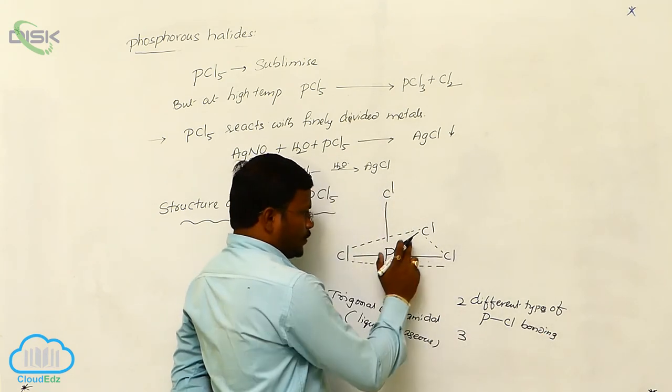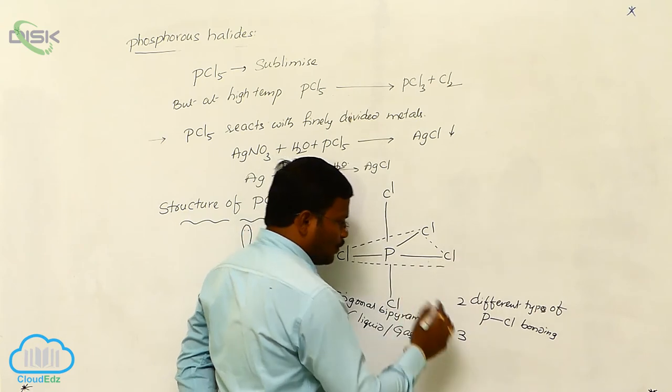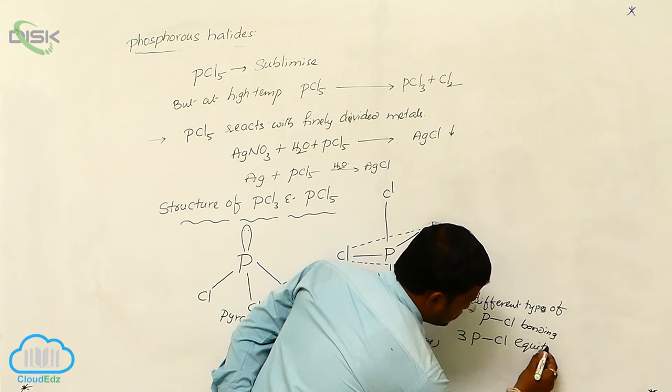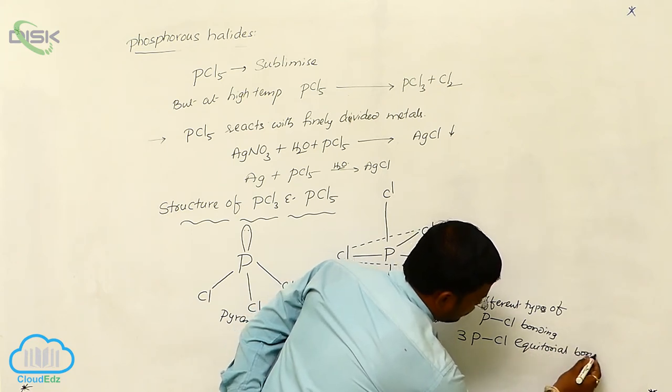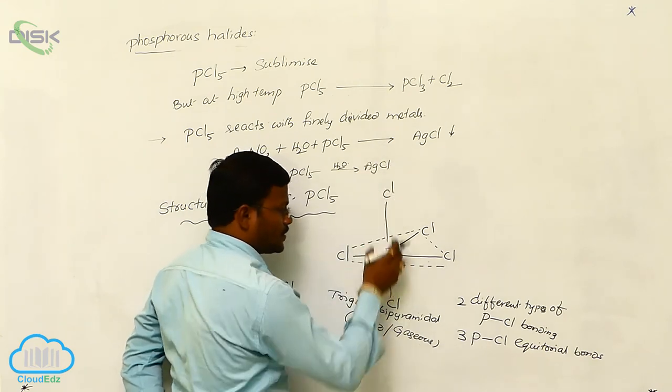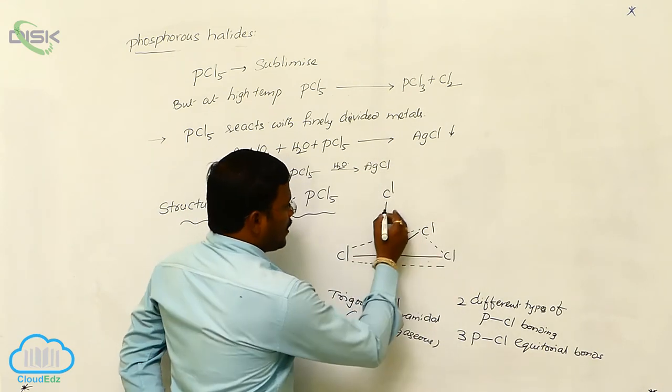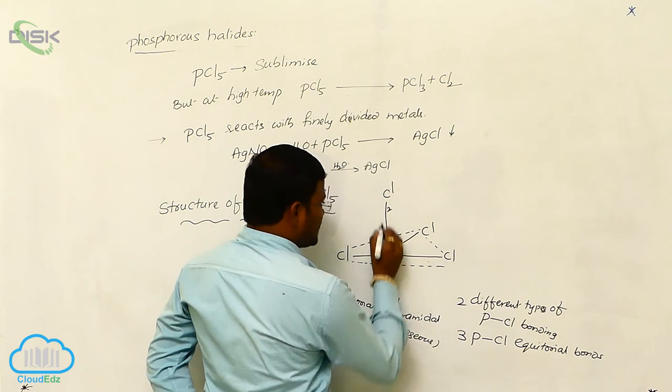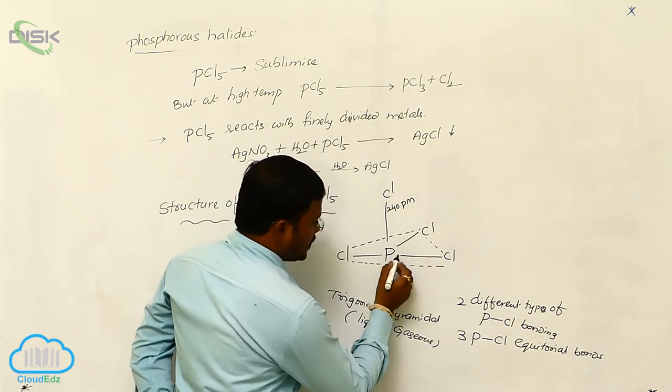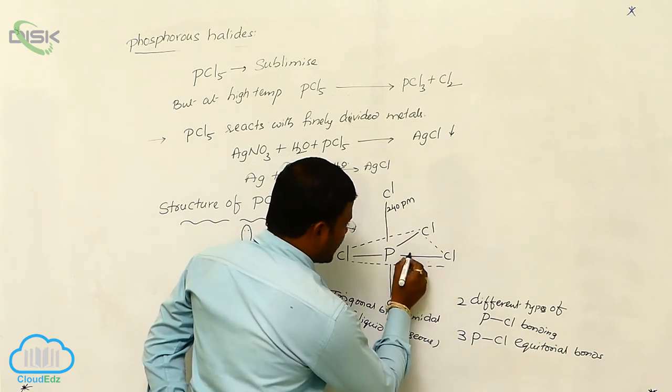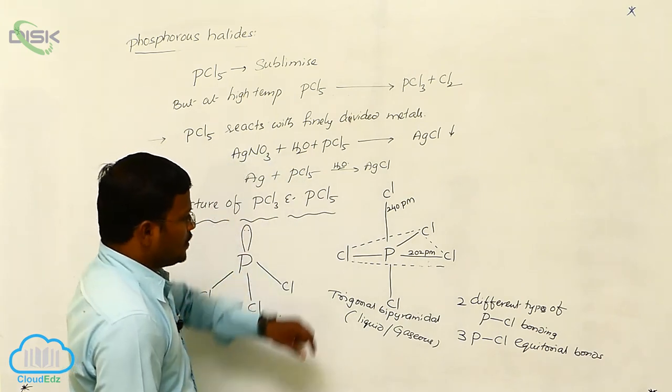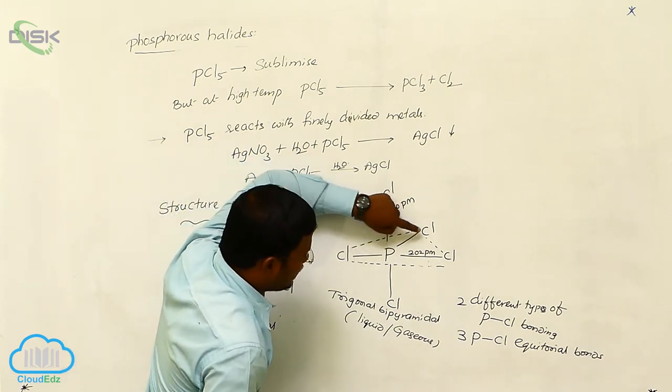Here, 1, 2, 3 which are parallel to phosphorus - these 3 PCl are called equatorial bonds, whereas these are like poles onto the plane. The bond angle for this PCl axial bond is 240.4 picometers, whereas the PCl equatorial bond is 202 picometers.